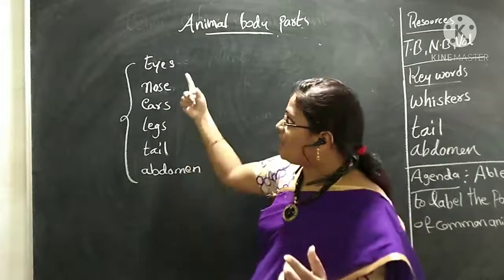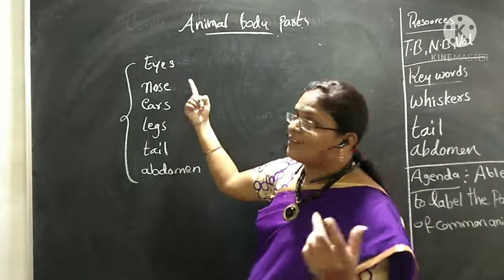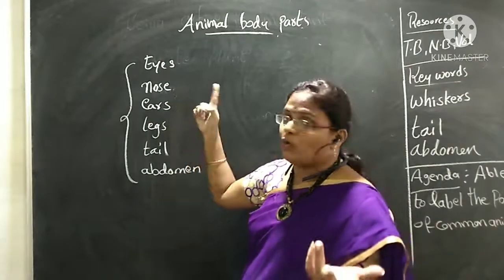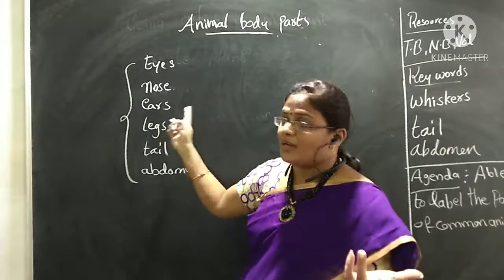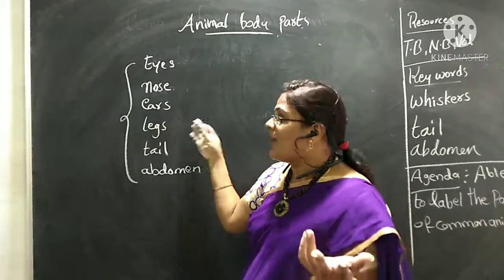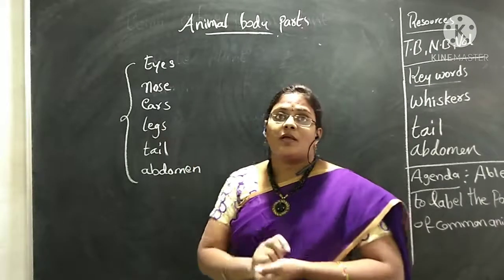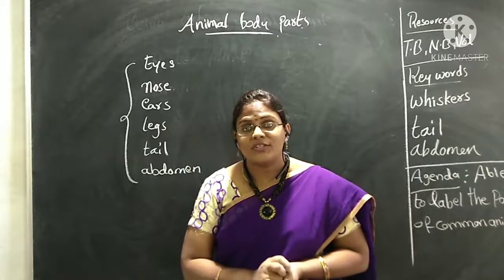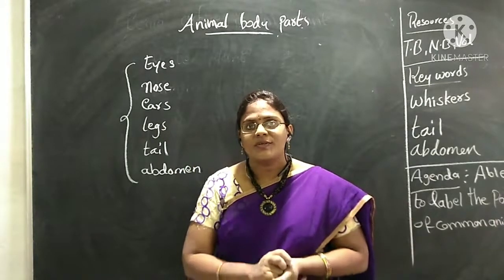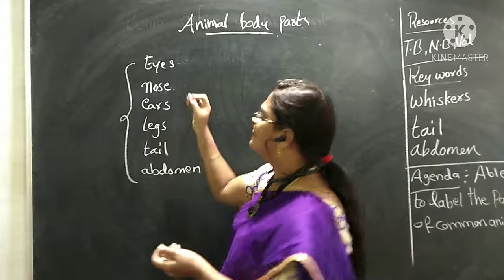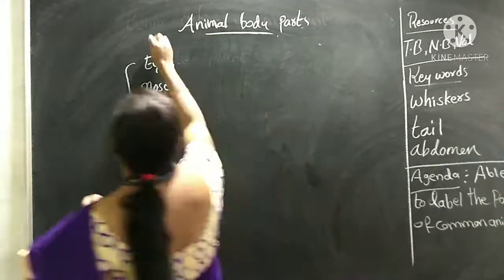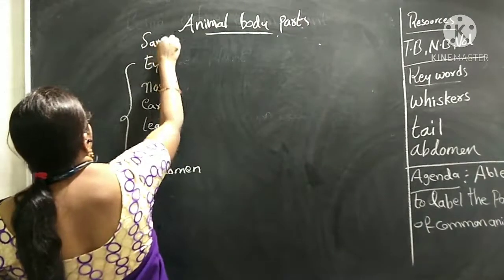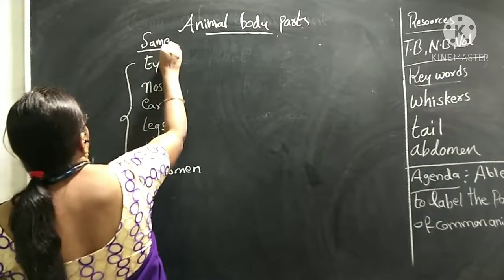All these parts are common to all the animals. Now tell me how they are the same in each. They are the same in eyes — they all have eyes. They are the same in nose and ears. All these are the same for all animals.